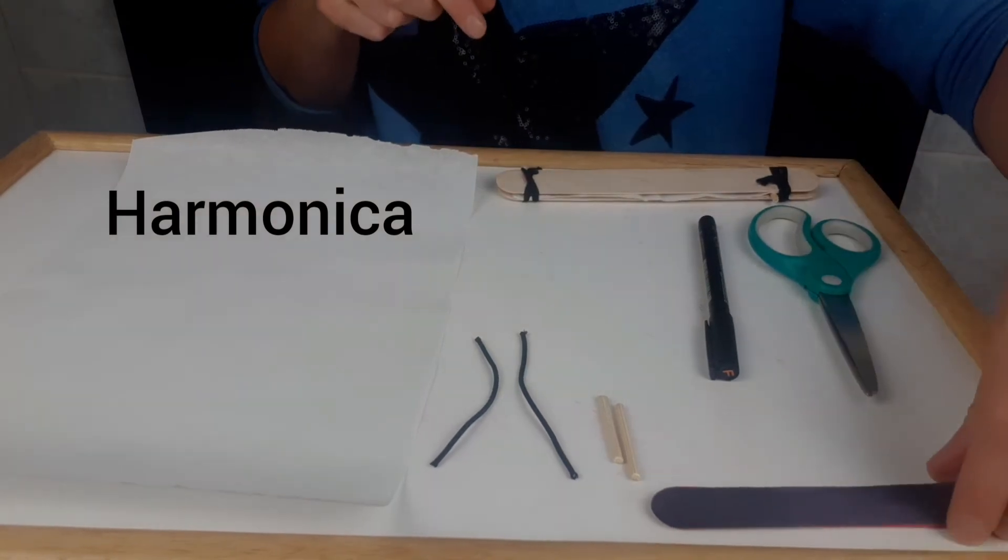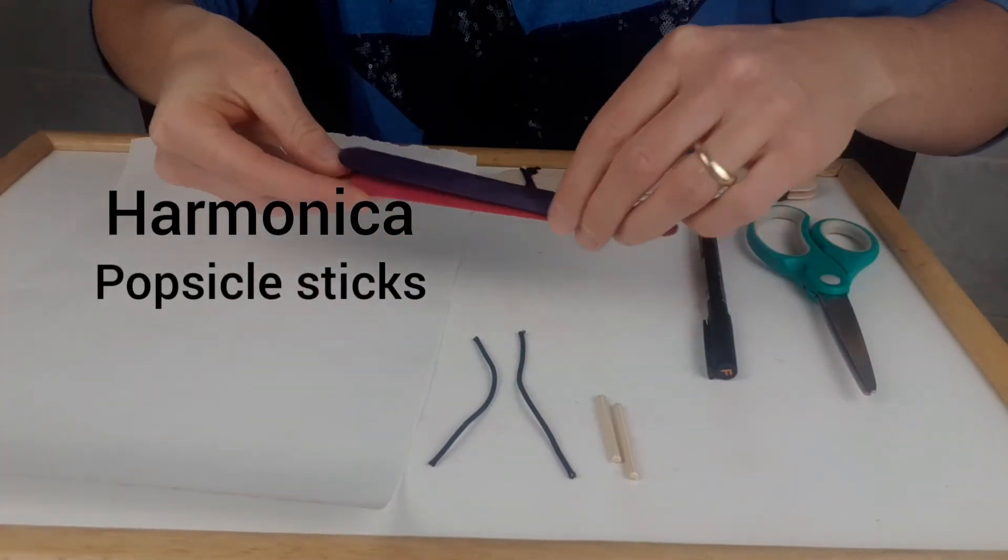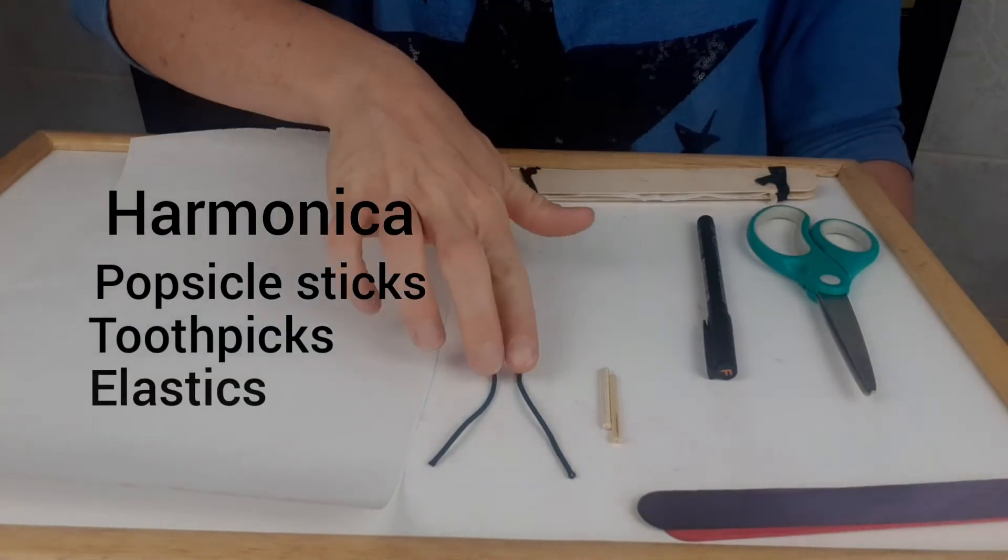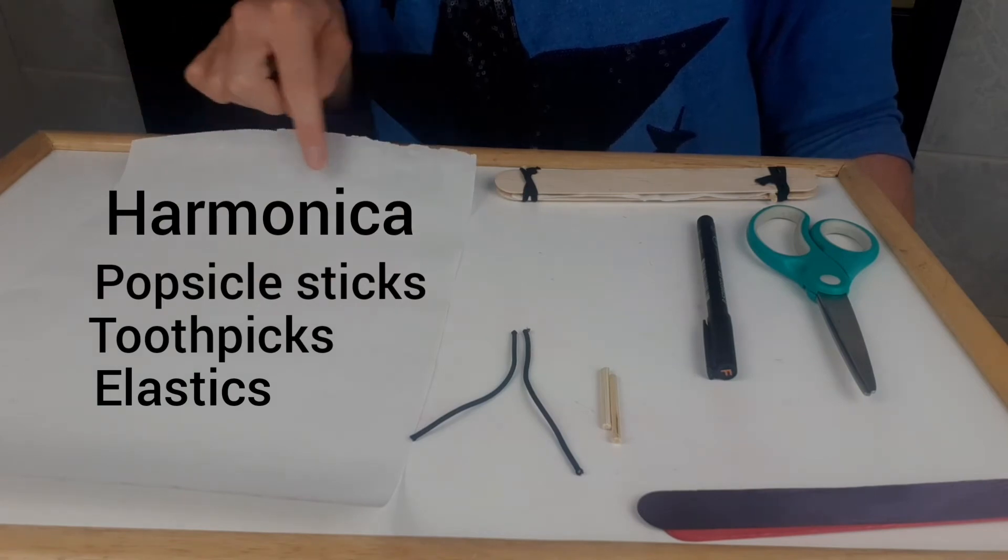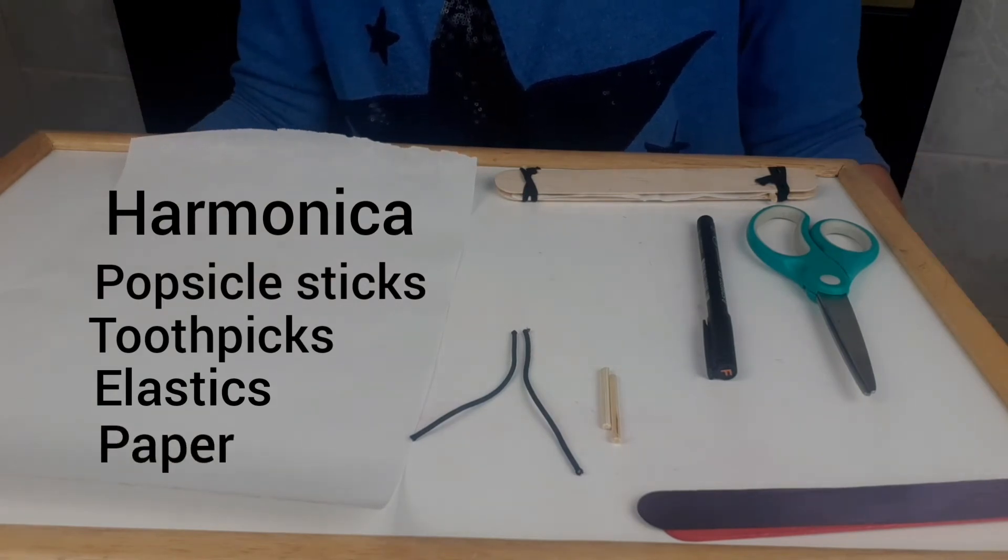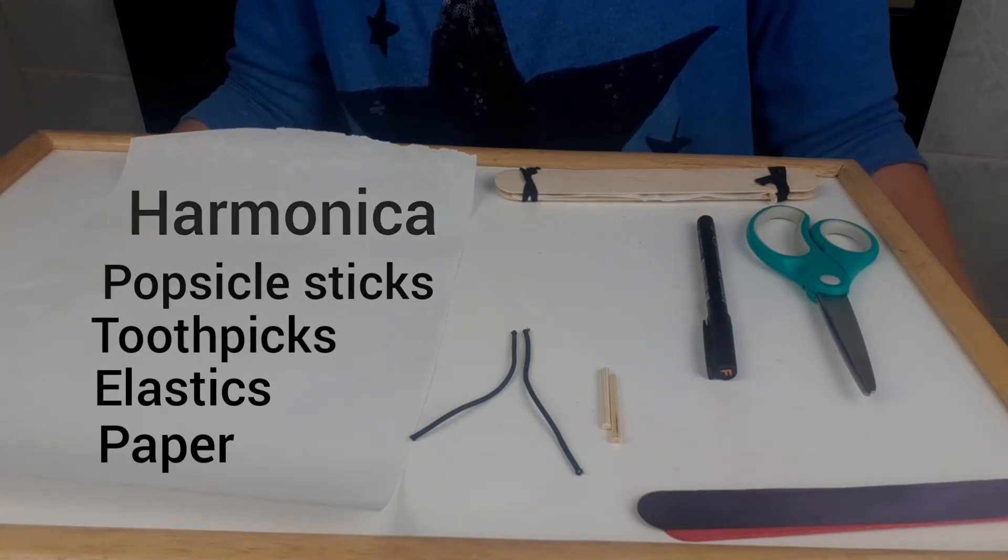For this, we'll need two popsicle sticks, two toothpicks or small pieces of wood, two elastics, and a piece of paper. For this, you can use wax or parchment paper, but you can even get a decent sound out of regular white paper.